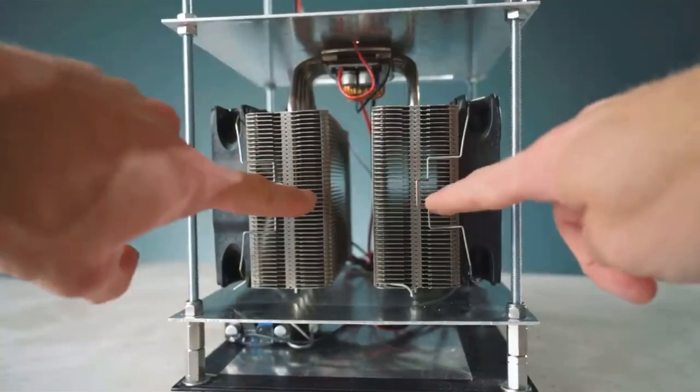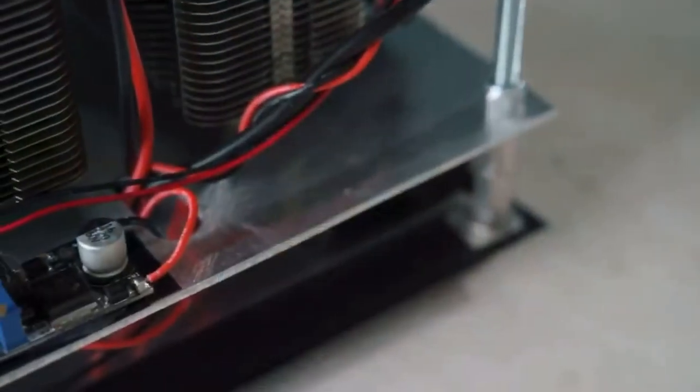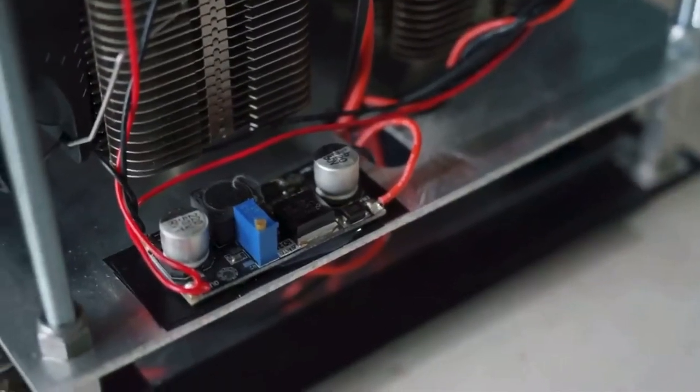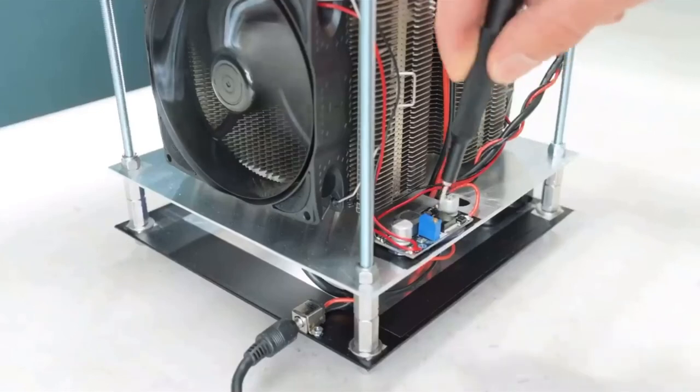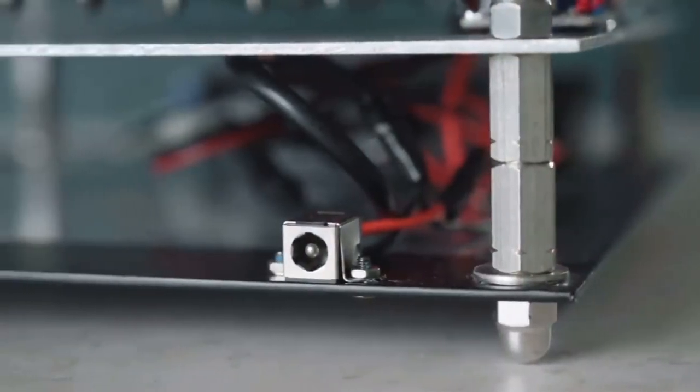Also, at this point you will need to add the fans, which in my case are both configured to push air outwards from the central gap, and they too are powered through a voltage regulator so that they can be set to spin at a slower speed by under-volting them. It is very important that these fans do indeed push air outwards like this, and I'll explain why in just a minute. As you can see, I've also added a power socket on the bottom.